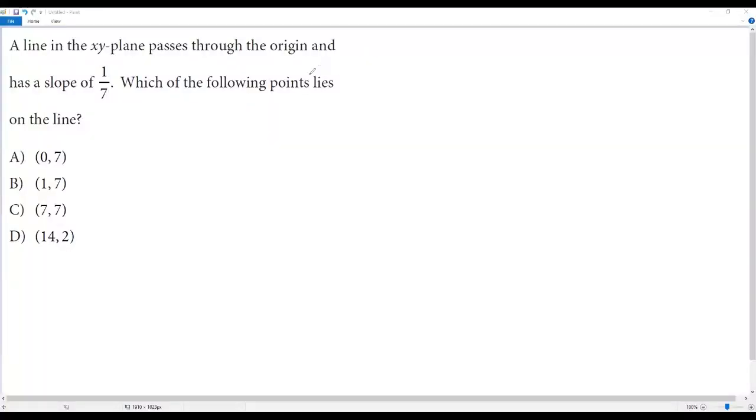Here we have an SAT math question on lines. Let's go over the question. A line in the xy-plane passes through the origin and has a slope of 1/7. Which of the following points lies on the line?